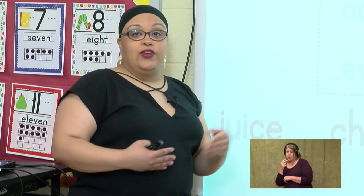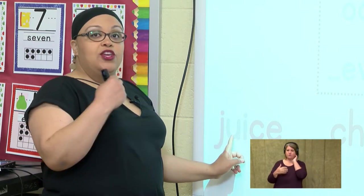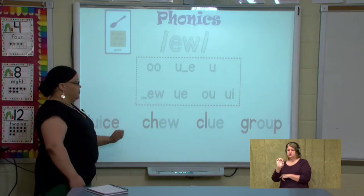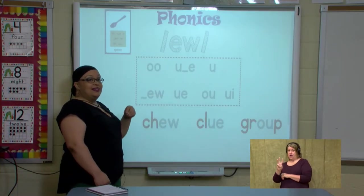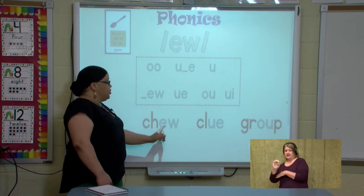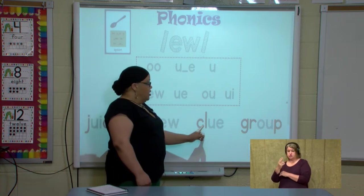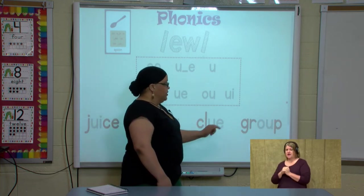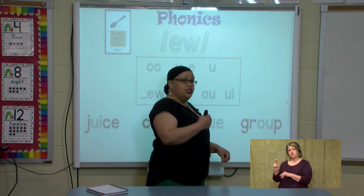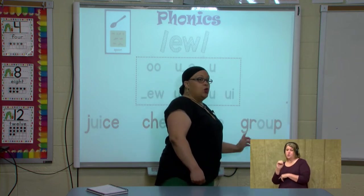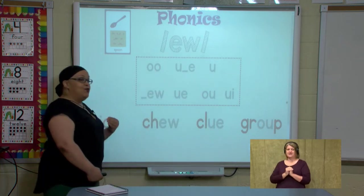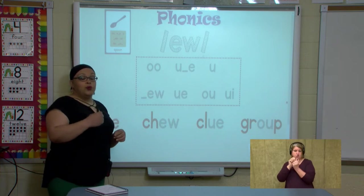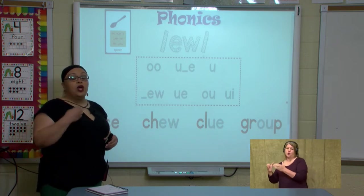I'm going to blend some words for you. Watch me. I see U-I — U-I says oo: juice. E-W is at the end of a word and it says oo: chew. U-E says oo: clue. O-U also says oo: group. Now listen to me read those words — juice, chew, clue, group. Notice in each word you hear the sound oo.